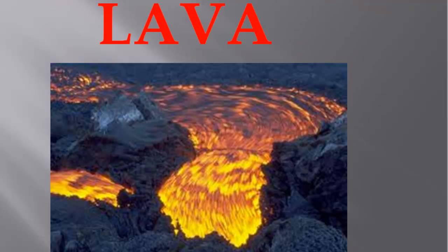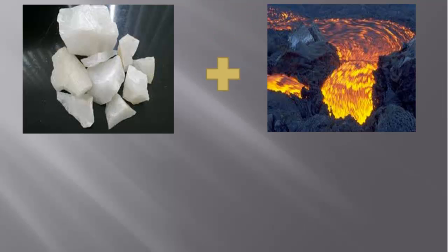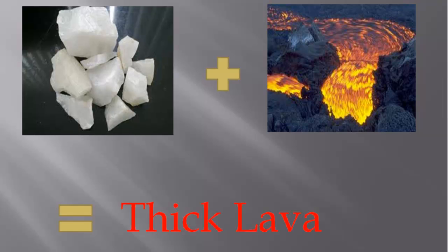For our discussion, we're concerned about the thickness or viscosity of lava. In lava, there's often this material called silica. Silica is a material that is found in the earth, and when there's a high amount of silica inside that lava, we end up with very thick lava.